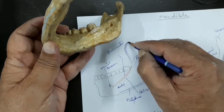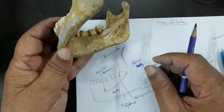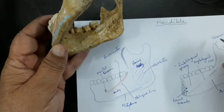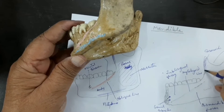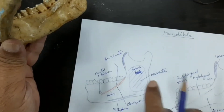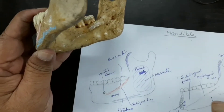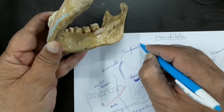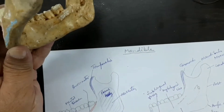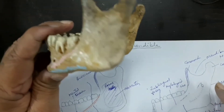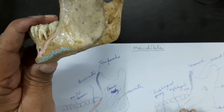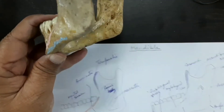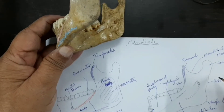On the anterior border and on the medial surface of the coronoid process, this is the insertion of the temporalis muscle. So on the external surface — the anterior border — and on the medial surface of the coronoid process, the muscle inserting is the temporalis muscle. These are the attachments on the external surface. Now let us come to the internal surface.